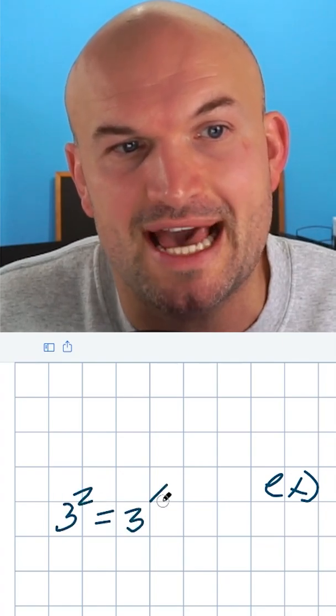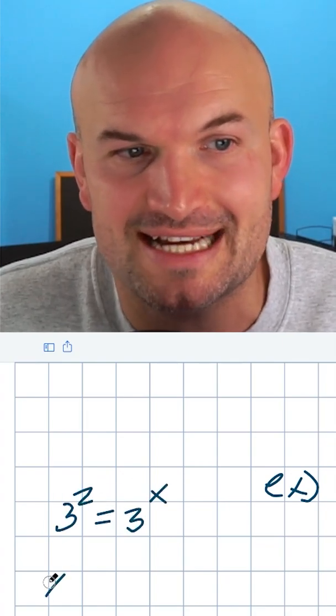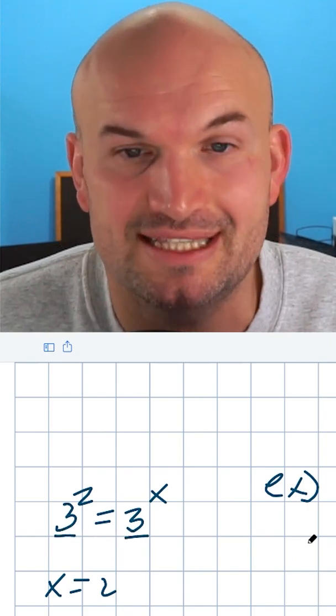If I had 3 squared is equal to 3 to the x, the only thing that makes sense for x is x equals 2. It only works because my bases are exactly the same.